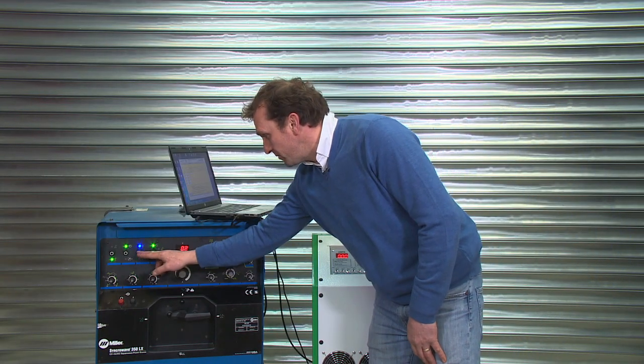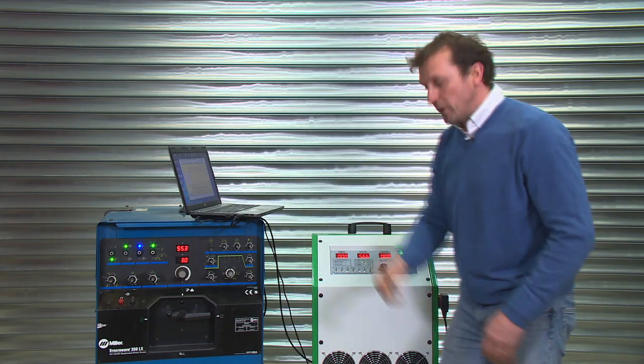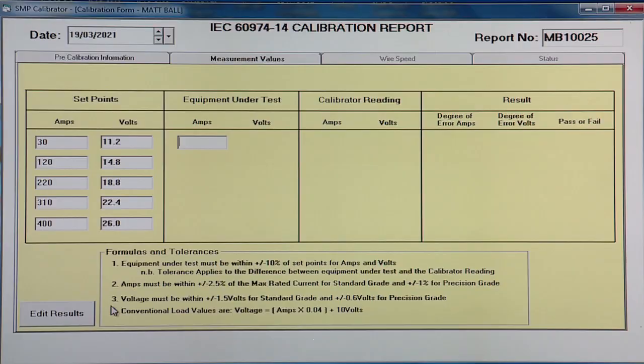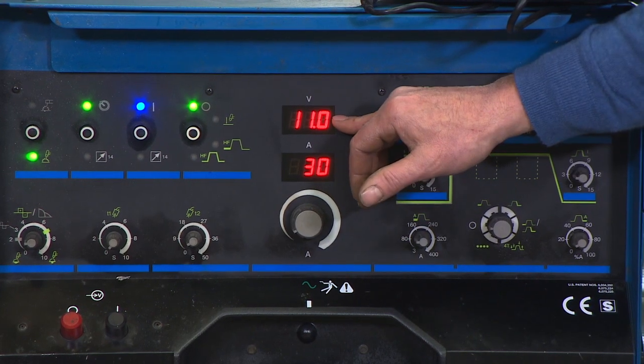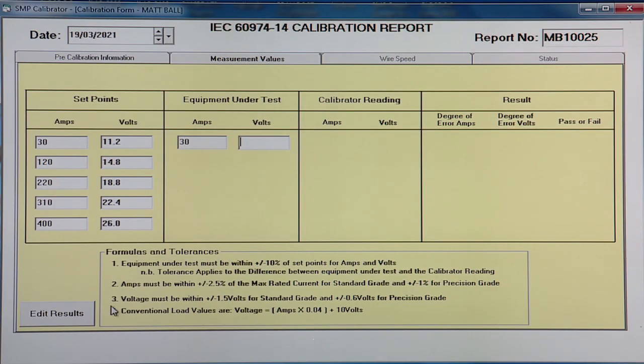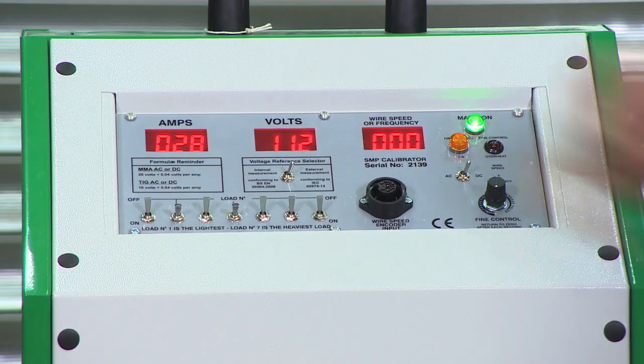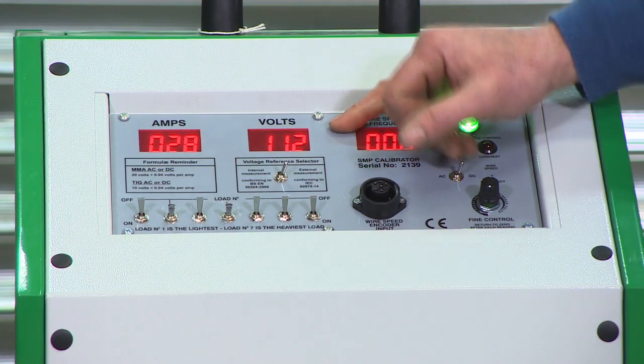So now we're basically going to repeat what we've done, but in the opposite polarity. Again, we energize the machine, either on the panel or by the trigger. And then back through the process once more. So we're looking for 30 amps, 11.2. We record 30 amps, 11.0. And then the calibrator reading of 28 amps, 11.2.